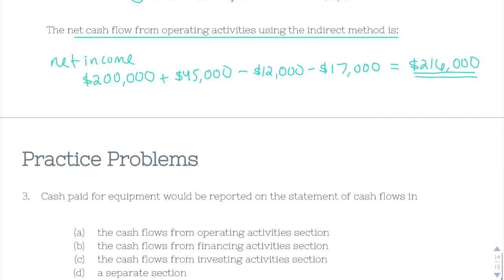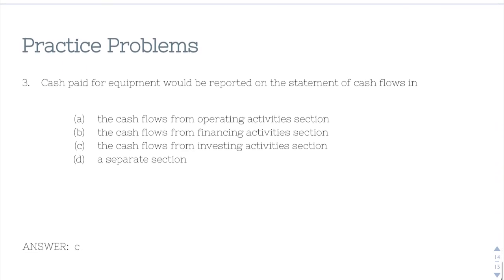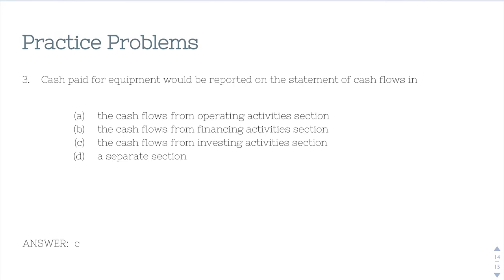Last one — this one's pretty easy. Cash paid for equipment would be reported on the statement of cash flows in cash flows from investing activities, because that is PP&E. It's not operating activities, it's not financing activities — that is an investment. If you have any questions on chapter 16, please feel free to reach out, and I hope you have a great rest of your day.